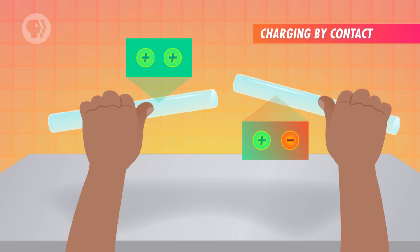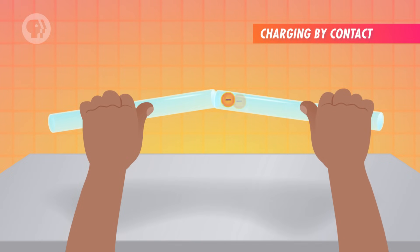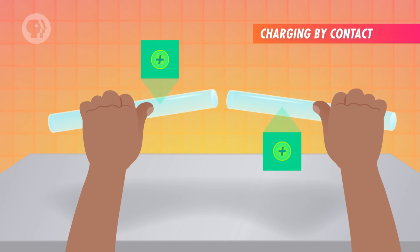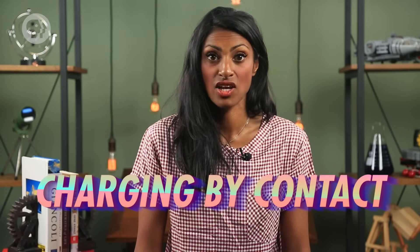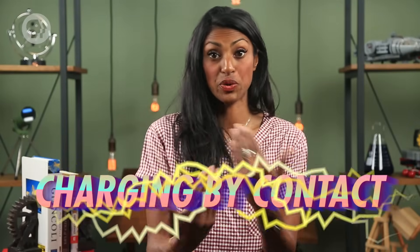Now, if we bring our positively charged glass rod in contact with another neutral rod, some of the negative charge – that is, some electrons – will jump from the neutral rod to the positive one, until both objects have the same distribution of charge. So now we have two rods that are both slightly positive. This is called charging by contact. When the two objects touched, charges moved between them.